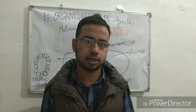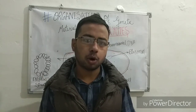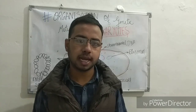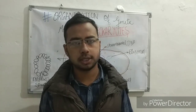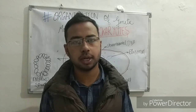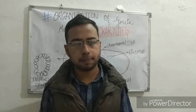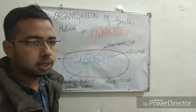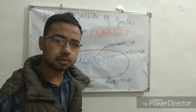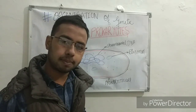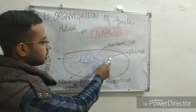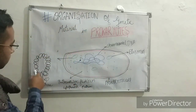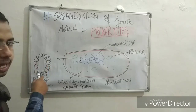Most of the genes in prokaryotes are stored in a small circular DNA known as a plasmid. A plasmid is a small, circular DNA that is physically separated from the chromosomal DNA and replicates independently.